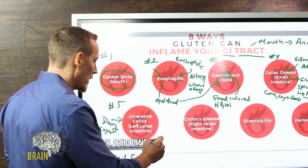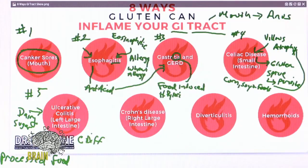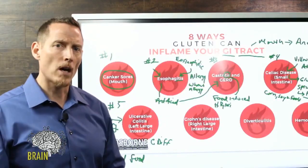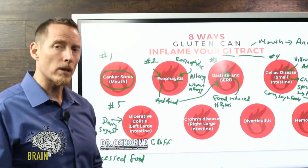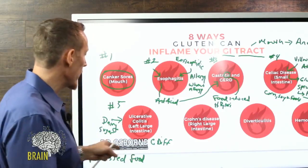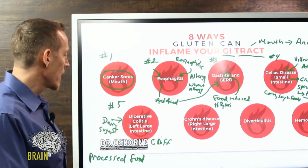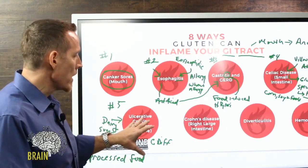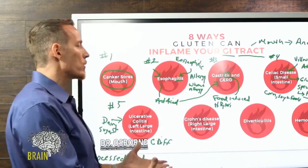Certain bacteria can also contribute to ulcerative colitis. For example, C. diff, or Clostridium difficile, tends to live in hospitals. Some people pick up C. diff during a hospital stay, and it's a known contributing factor to ulcerative colitis beyond gluten.